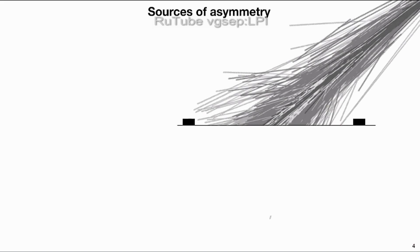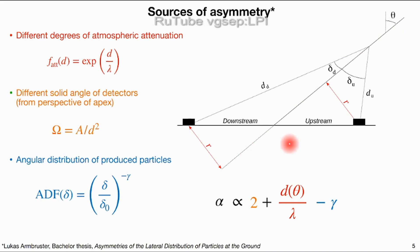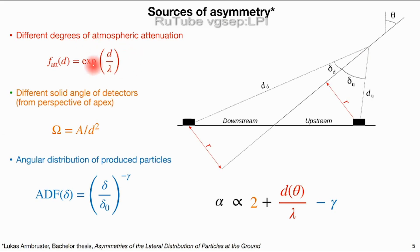Simple models help us understand these effects. In a conical model, we have an apex where showers originate, the zenith angle of the shower, and two detector stations — a longer distance to the downstream station and a shorter distance to the upstream station. The first source of asymmetry comes from different amounts of atmospheric attenuation: particles originating from the same point and traversing a longer distance are more absorbed in the downstream direction. The amount of absorption depends on the shower components — electrons and photons versus muons, which are less absorbed — so this decay constant changes.